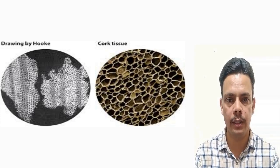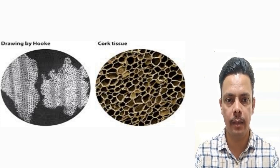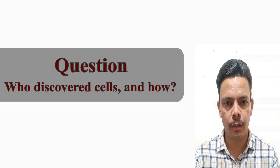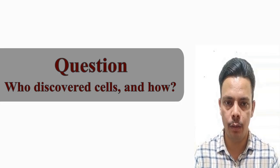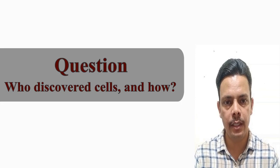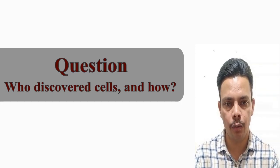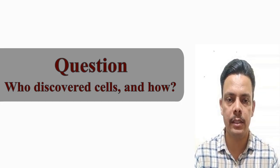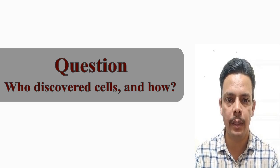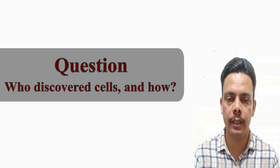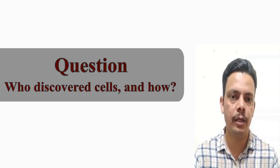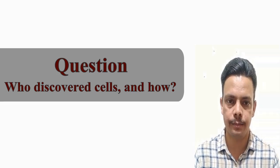This is all about the discovery of the cell. From here we can answer one in-text question: Who discovered cells and how? Robert Hooke discovered cells with the help of his self-designed microscope by observation of cork, where he observed the cells.